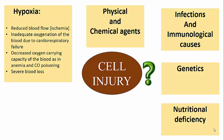Another important cause of cell injury is nutritional imbalance — it could be in the form of nutritional deficiency or nutritional excess. Nutritional deficiency in the form of protein energy malnutrition is an important cause of cell injury. Excess nutrition can also cause injury; for example, increased cholesterol can lead to atherosclerosis. Obesity is associated with an increased risk of diseases like diabetes and cancer.